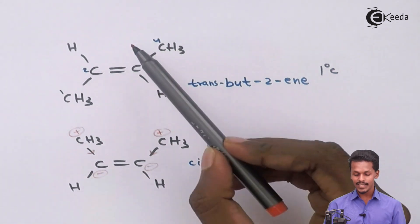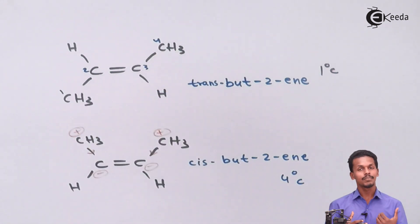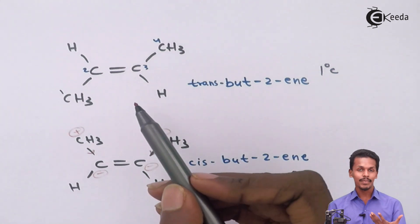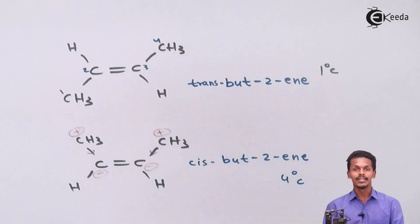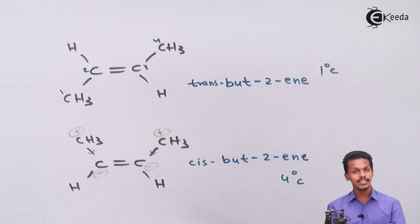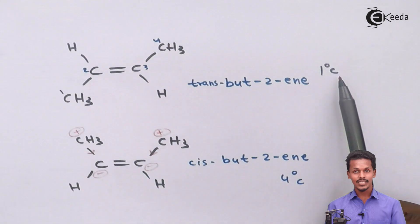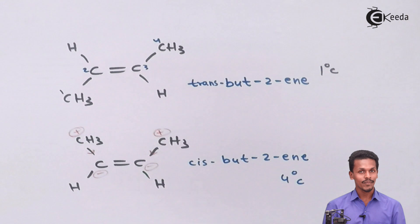In trans-but-2-ene, the two CH3 groups are on opposite sides. Because of this, their electronic effects nullify each other, making it essentially a non-polar molecule. With no significant intermolecular force of attraction, it has a lower boiling point of 1°C compared to the cis isomer's 4°C, which has stronger intermolecular forces due to greater polarity.